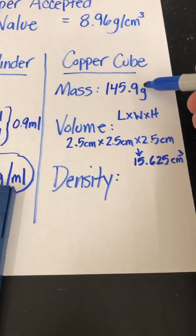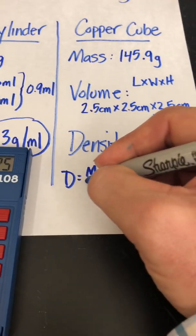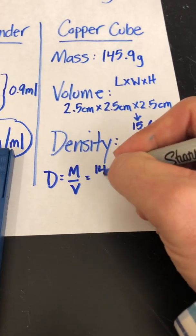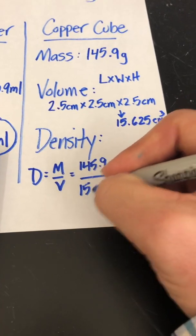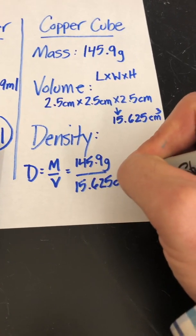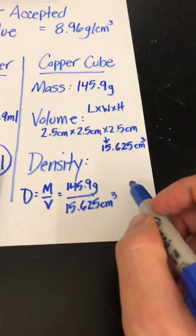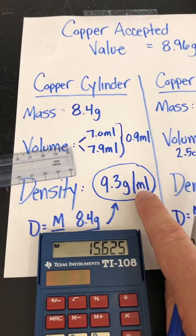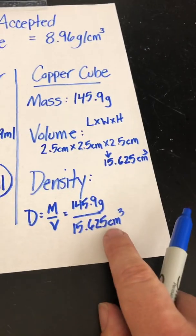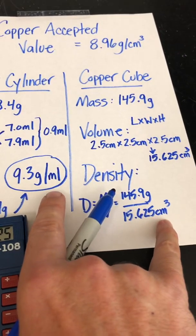Now I have my mass and now I have my volume. Density equals mass over volume, 145.9 grams divided by 15.625 cubic centimeters. The cubic centimeters comes from the three centimeters that I multiplied together. Now you'll notice that I used milliliters with the cylinder because I was dealing with water. Here I'm dealing with my solid cube. Cubic centimeters and milliliters are interchangeable. You could use either one.